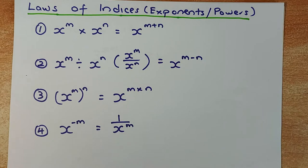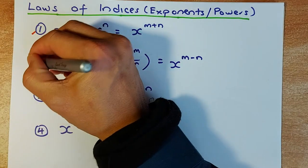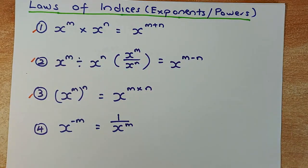So there are three laws of indices, as indicated there: one, two, and three. The fourth one is the law of indices involving negative powers, which we'll look at at Level 2.